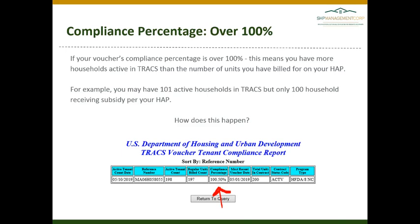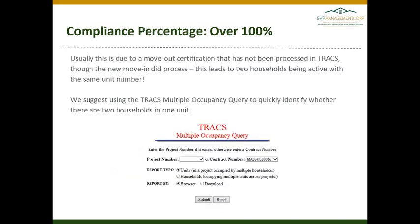For example, you may have 101 active households in TRACS but only 100 households receiving subsidy per your HAP. In the example below, the compliance percentage is 100.5 — the active number of households in TRACS is 198, however there are only 197 being billed for on the HAP. So there is a duplicate household or a duplicate unit with a second household listed as active.